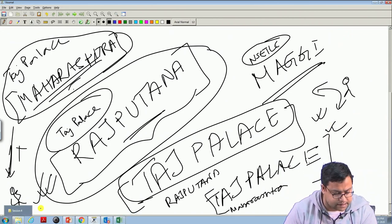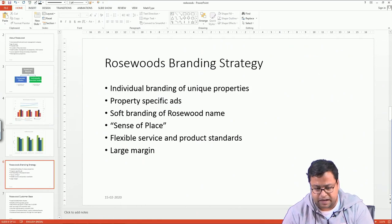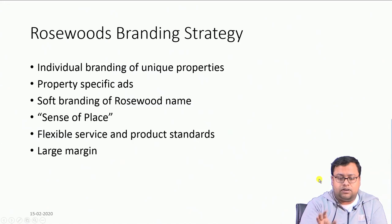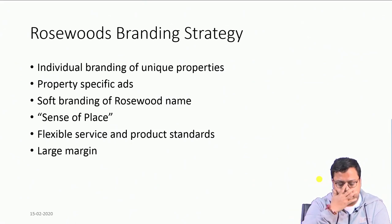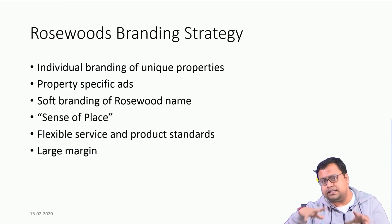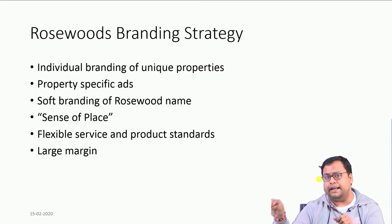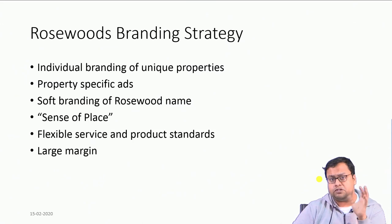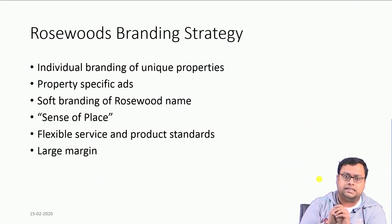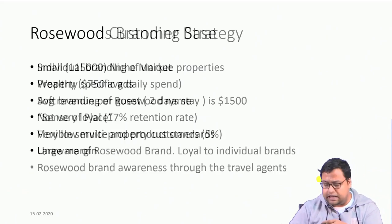Coming back to the case context: Rosewood had individual branding with unique properties, property-specific ads, short branding of the Rosewood name, and a sense of place. Service and product were flexible because local managers — who know the heritage and culture much better than a brand manager sitting elsewhere — were given full independence. This made it costly and margins were low.